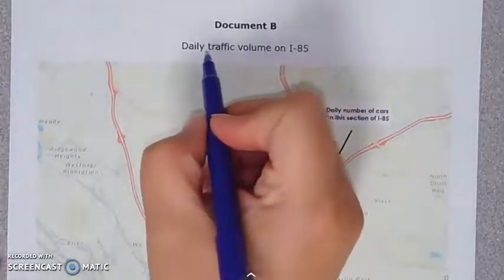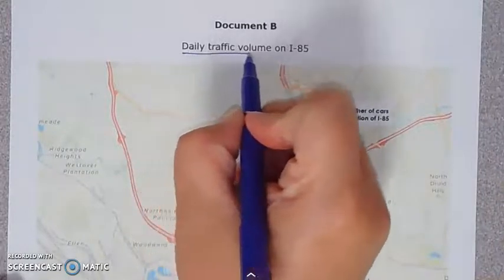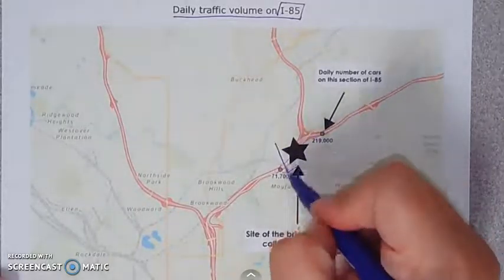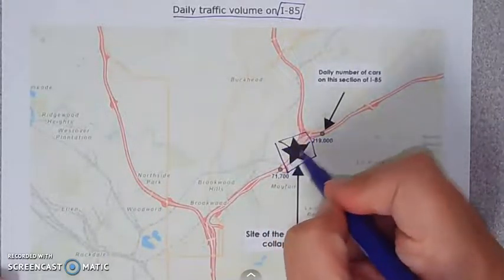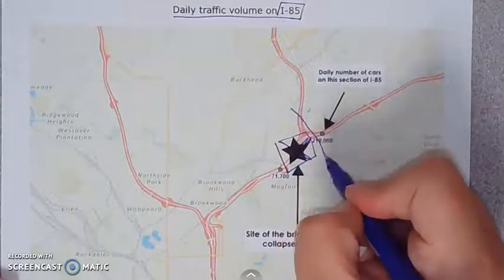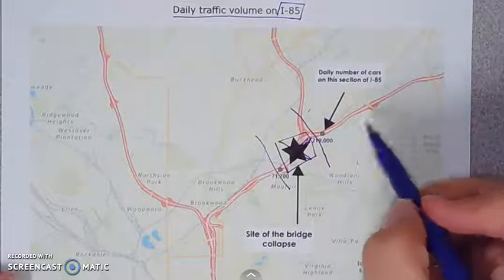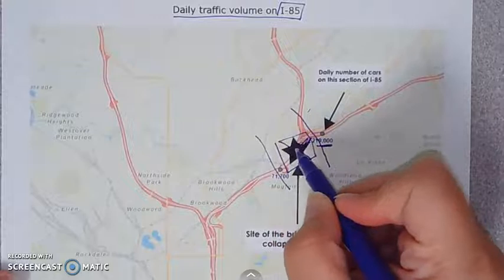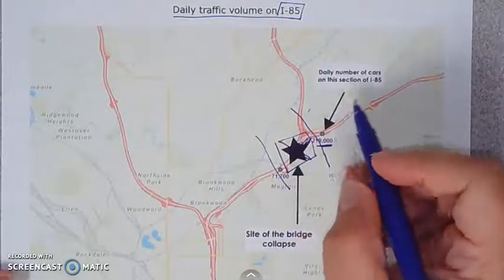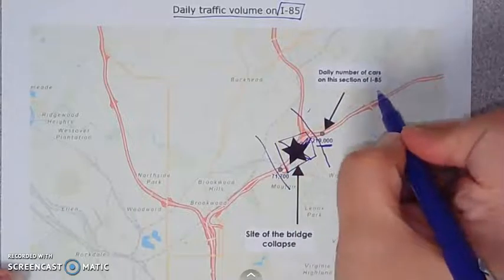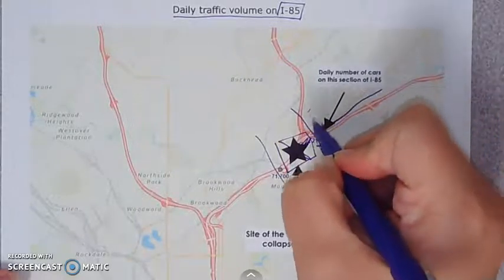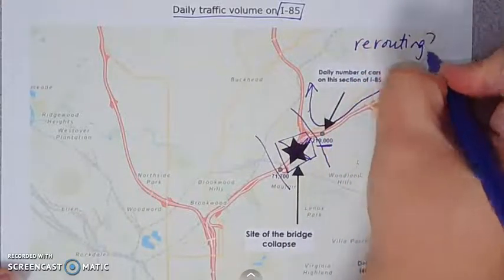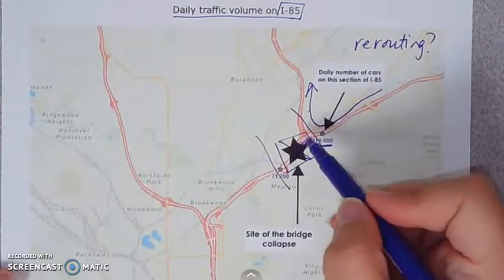Document B is a map showing the daily traffic volume on the interstate. The star on the map marks where the bridge collapsed, which ended transportation between two points. There are 219,000 cars on this road daily, so blocking it is a huge deal for transportation. Thinking about this as a cell, when something gets blocked, traffic has to reroute — so I'm writing 'rerouting' with a question mark, as that might be how I use this document to discuss the cell.